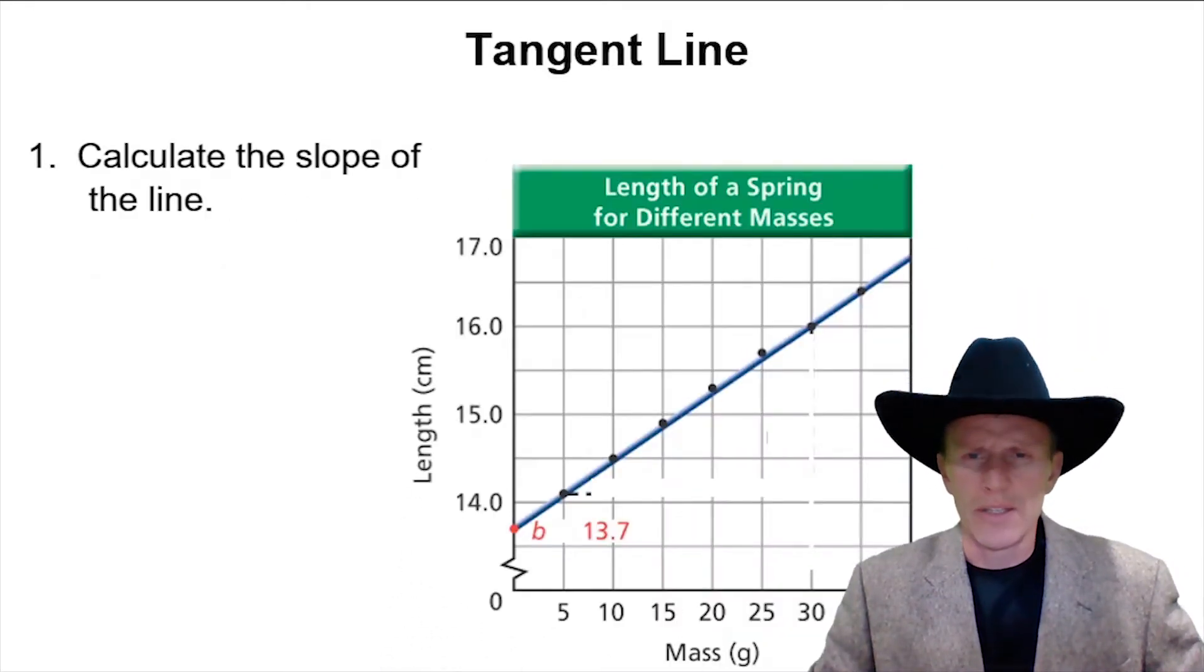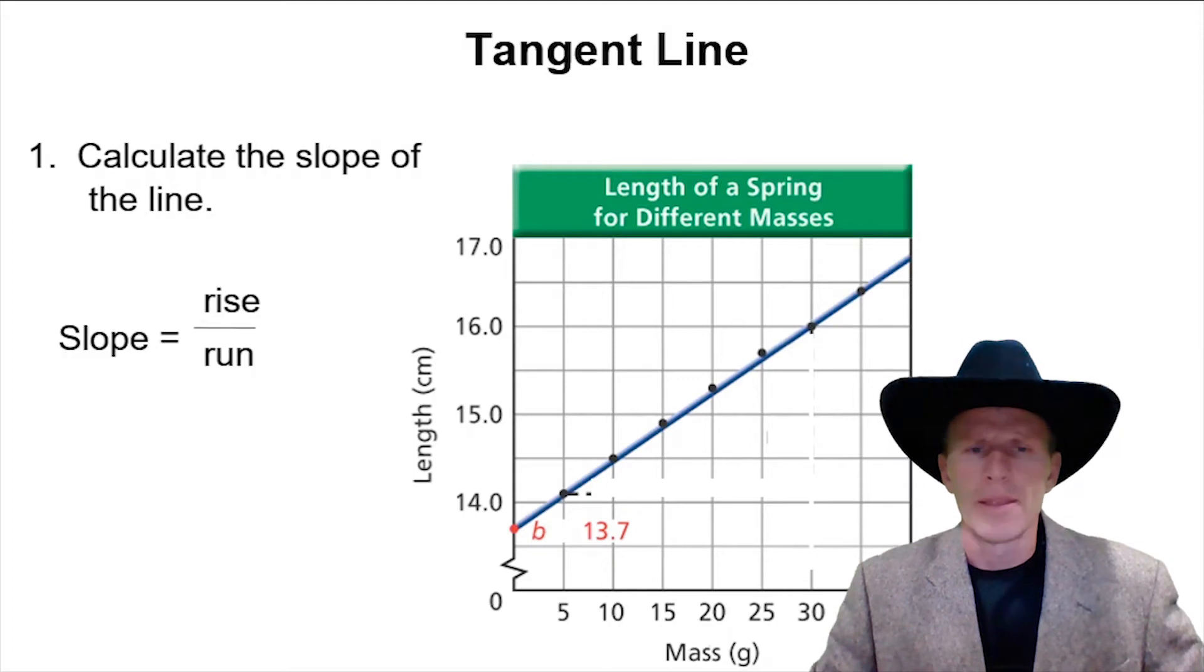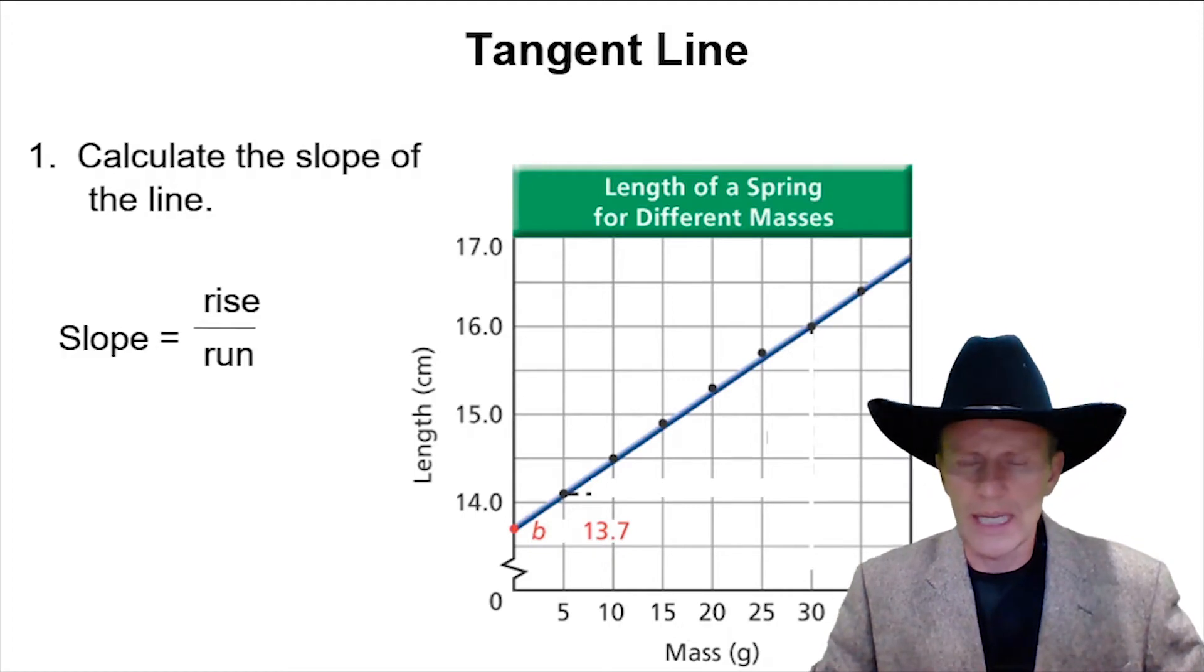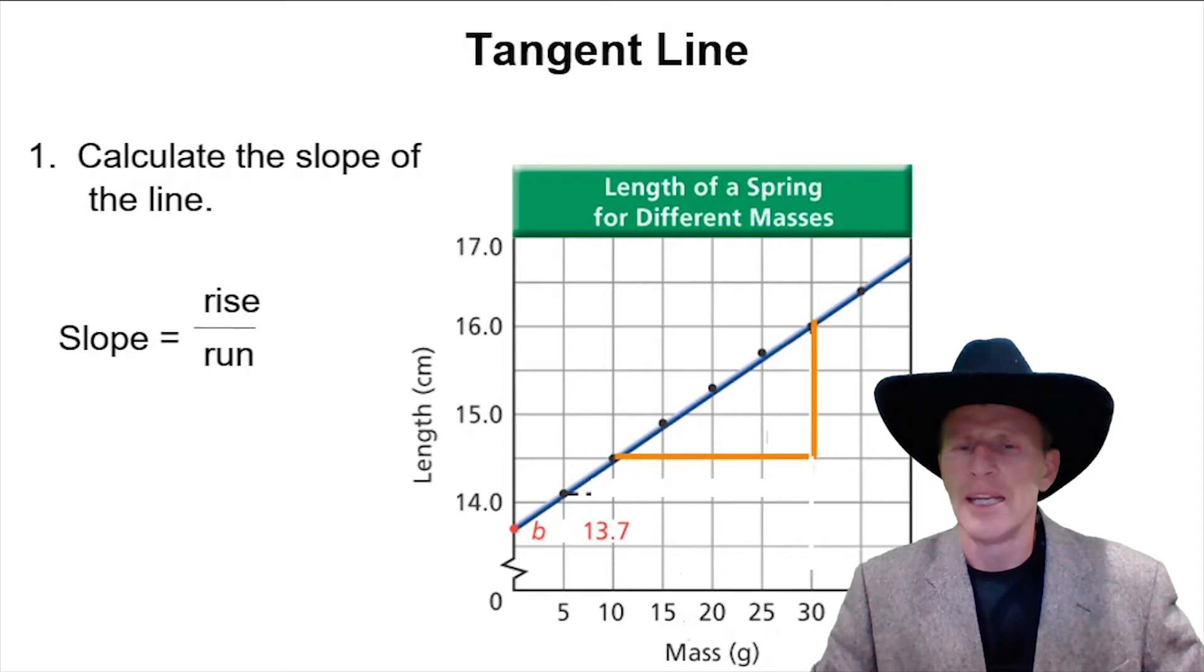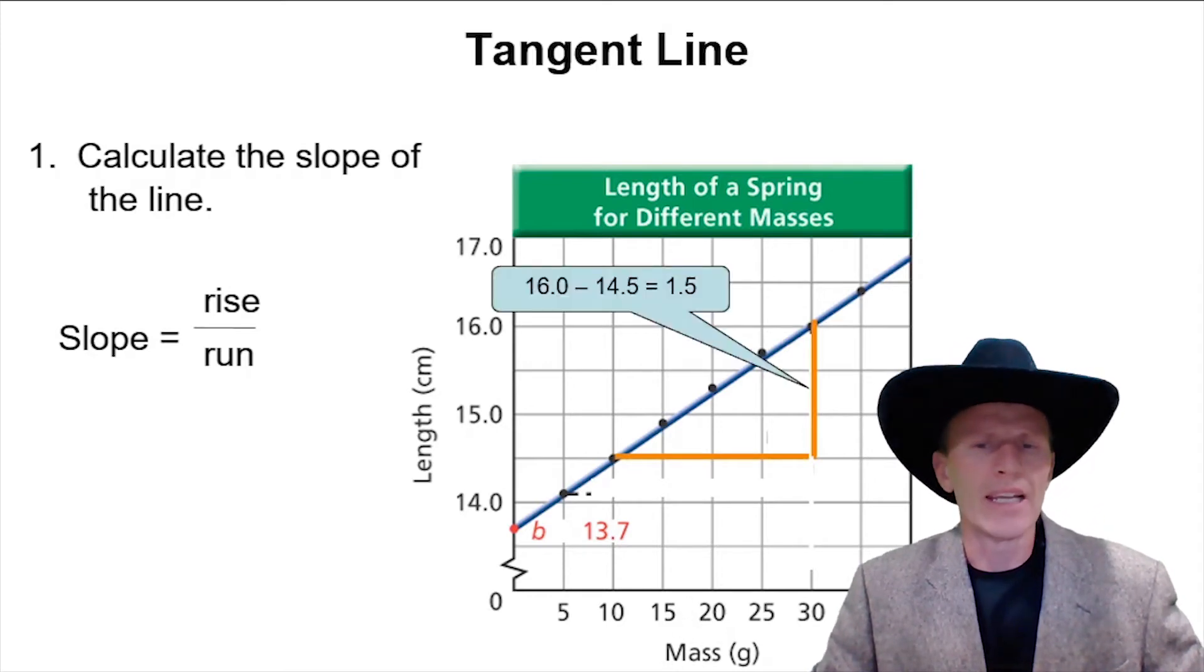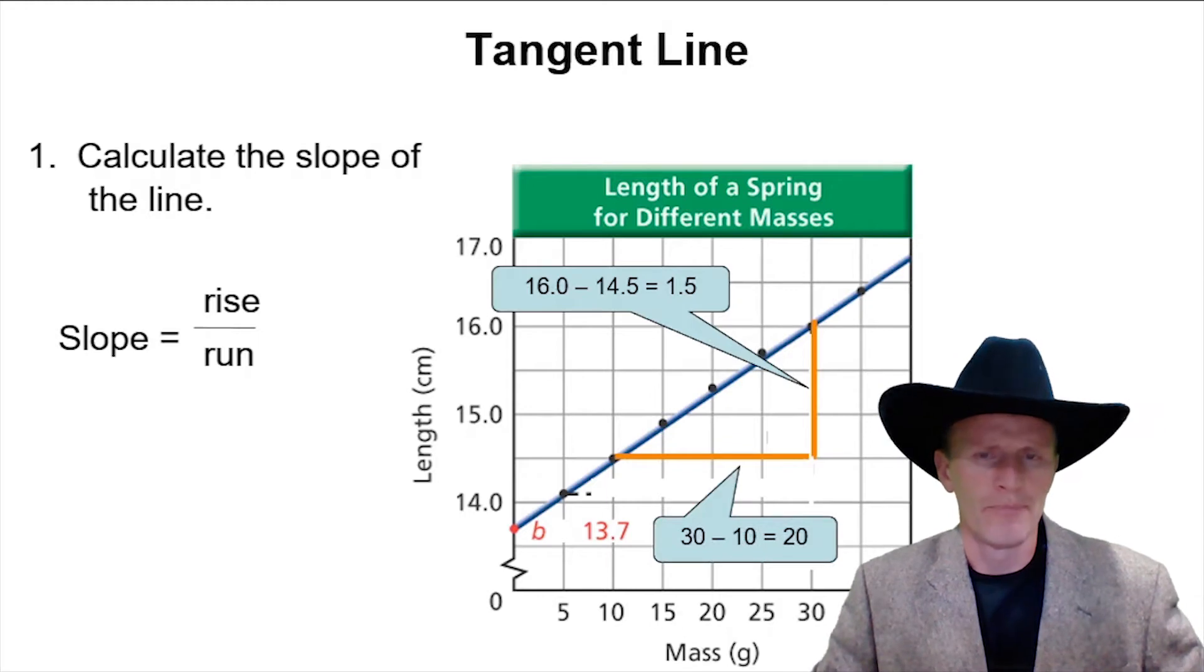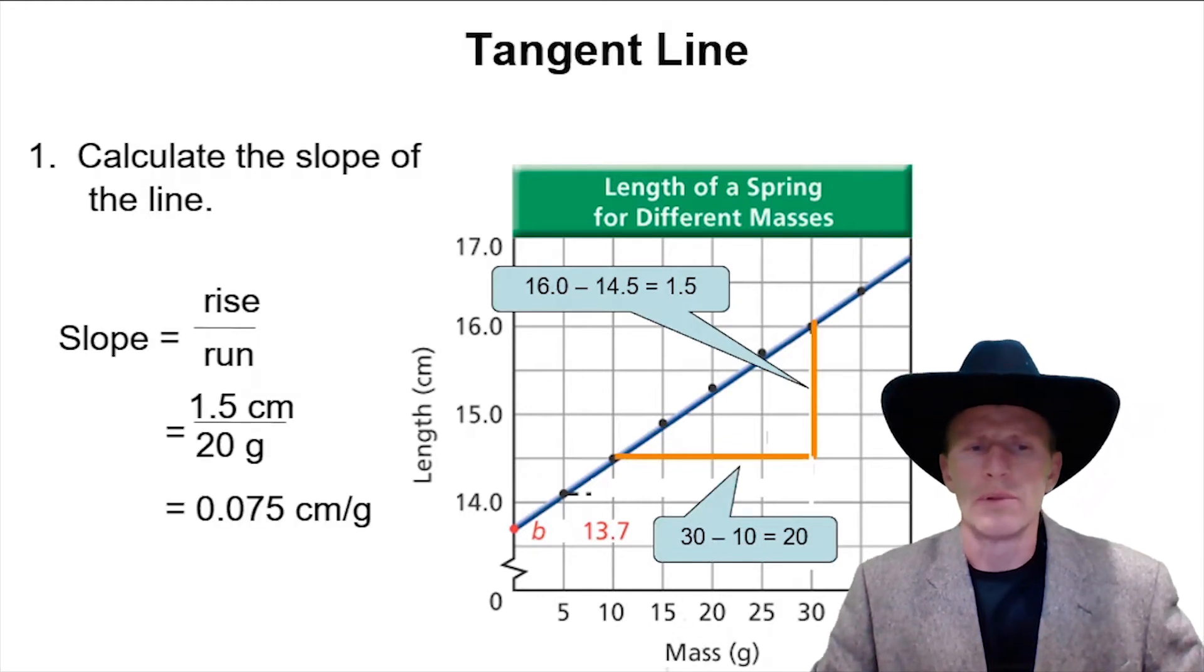So if I were to ask you to calculate the slope, find two points on that line and draw a vertical line and a horizontal line, and find the length of the vertical line and the length of the horizontal line and divide them. You would get your slope, 0.075 centimeters per gram for this particular line.